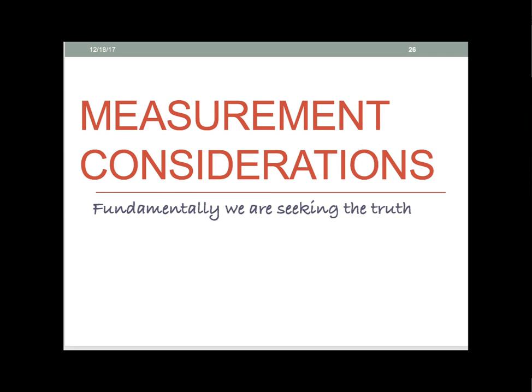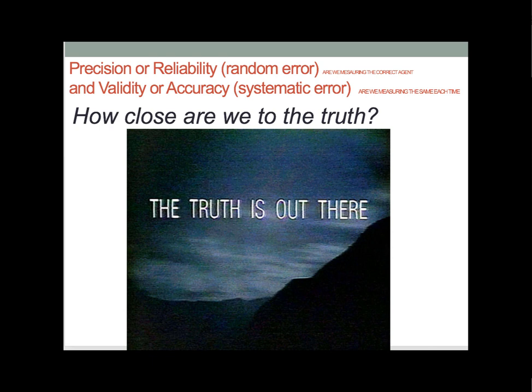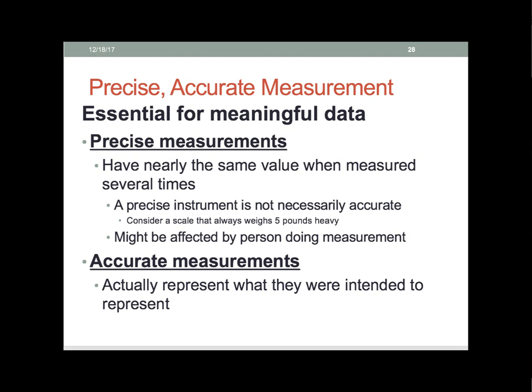We're going to talk more about our measurement considerations and error, because ultimately what we're trying to do is come as close to the truth as we possibly can — but of course we don't know what the truth is. There are two terms used interchangeably: precision or reliability, which is our random error; and validity or accuracy, which is our systematic error. Precision could be seen as: are we measuring what we think we're measuring? Validity or accuracy is: are we getting the same results under the same conditions every time we sample?